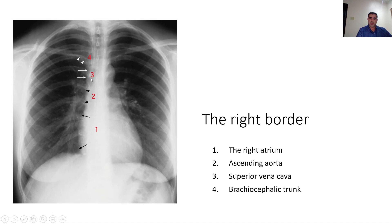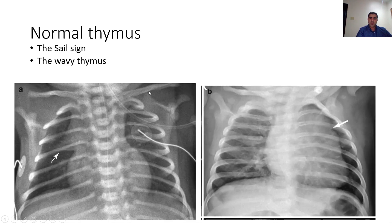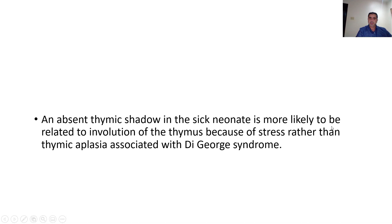The right border of the heart is composed of the right atrium, the ascending aorta, the superior vena cava, and you may also see the brachiocephalic trunk. For neonates in particular, it's important to recognize the normal appearances of the thymus — for example, the sail sign as seen here, or the wavy thymus. The absence of the thymus shadow in a neonate is more likely related to involution of the thymus due to stress rather than thymic aplasia associated with DiGeorge syndrome.